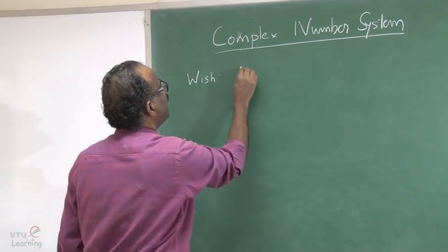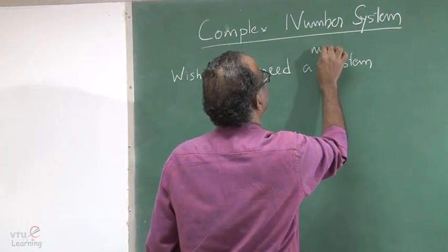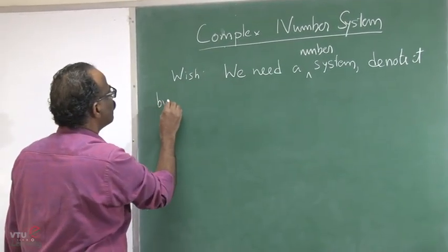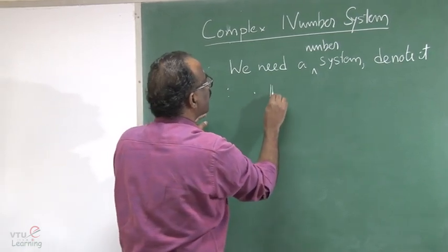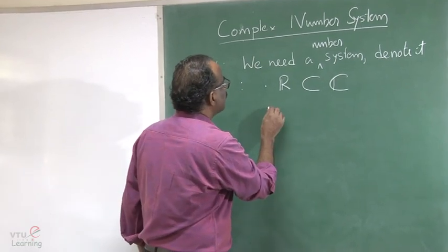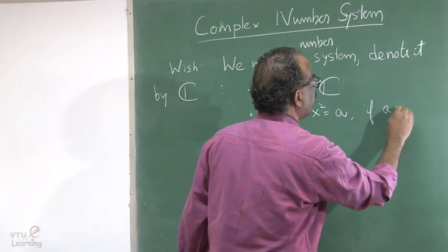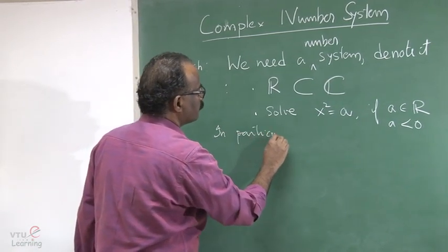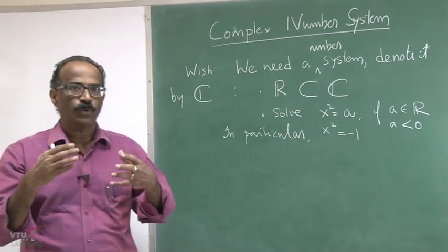We need a system of numbers — call it C. In this number system, the first condition is that the real number system must be part of it; we want to enlarge the system. Secondly, we want to solve x² = a when a is a real number that is negative — in particular when a equals minus one.